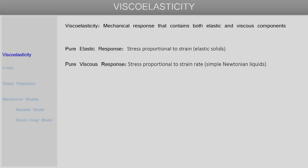In contrast, if we have a purely viscous liquid, then the stress produced in the material is proportional not to the strain applied, but to the rate of strain. The rate at which the strain is changing — that is the quantity which is proportional to stress for a purely viscous substance like simple liquids.